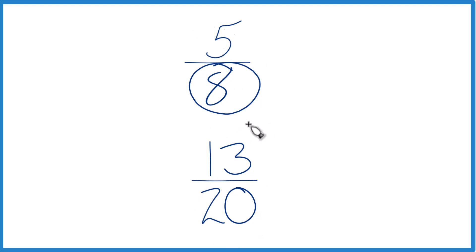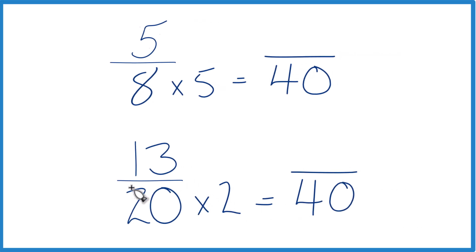So 8 times 5 gives me 40, and then I know that 20 times 2 gives me 40. That would give me the same denominator, but I can't just multiply the denominator by 2.